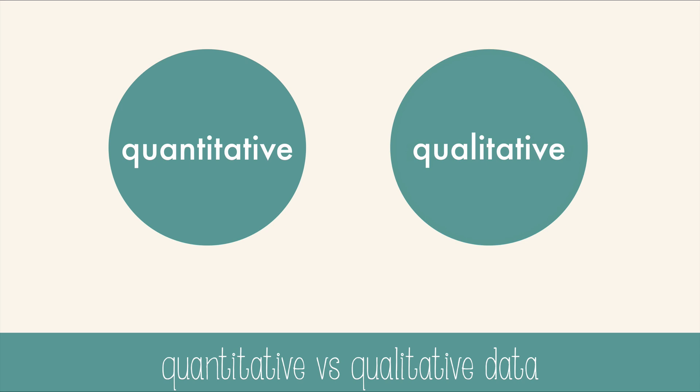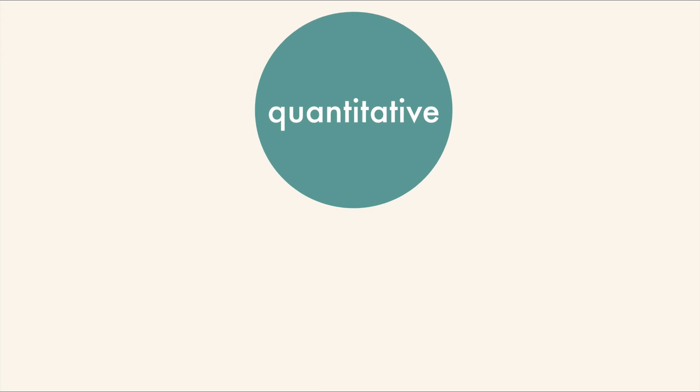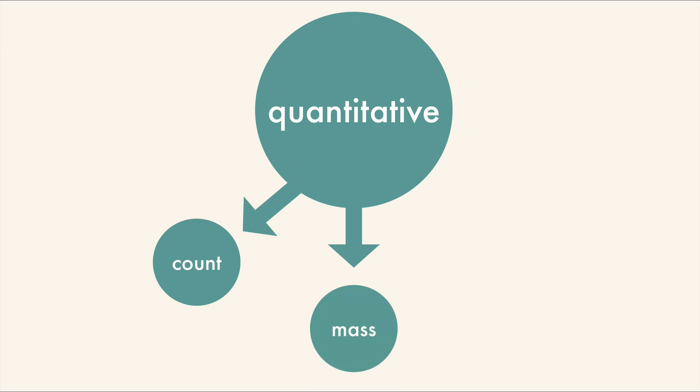But we use a lot of quantitative data in science, especially in chemistry. To measure the amount of something in a quantitative way, you could count the number, or measure the mass, or measure the volume.